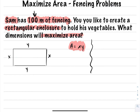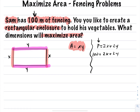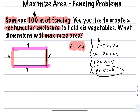What else do we know? We're given the fact that Sam has 100 meters of fencing to use up. That's not area — that's perimeter. The perimeter of this shape is going to be 2x plus 2y. So 100 equals 2x plus 2y. Dividing across by 2, we get 50 equals x plus y. I'm going to isolate for y, so y equals 50 minus x. Now I substitute that into my area equation, replacing y with 50 minus x.